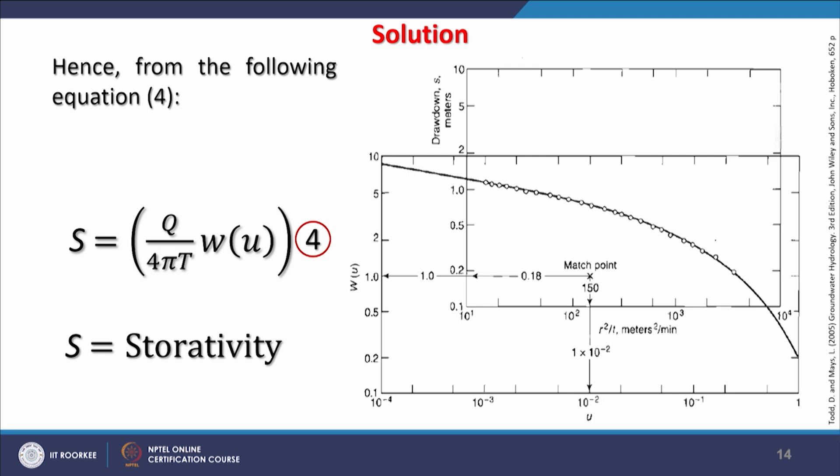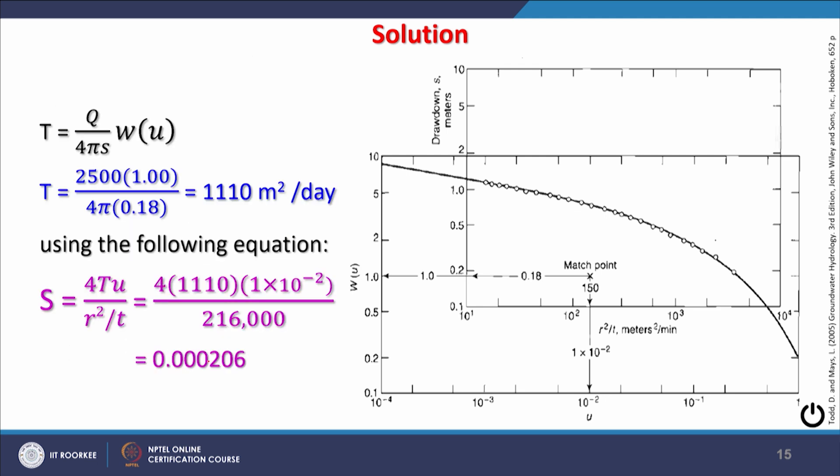From equation 4 for transmissibility, we can substitute these values in this equation—the values which we have determined—and we get 1,110 square meters per day.